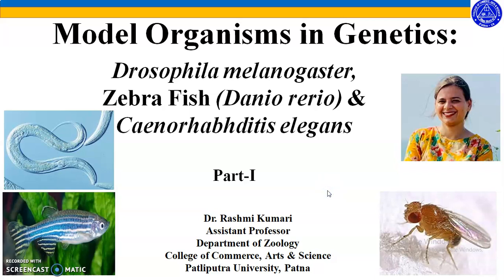Hello everyone. In this video lecture series, I am going to talk about model organisms used in genetics: Drosophila melanogaster, zebrafish, and Caenorhabditis elegans. These are the three most common and preferred organisms used in different genetic experiments as models, and they are also used in other fields of research. This video series is an outcome of a hands-on workshop-cum-training program held at Daulat Ram College, University of Delhi, in association with Sanskriti Foundation under IQAC on 28–31 May 2019.